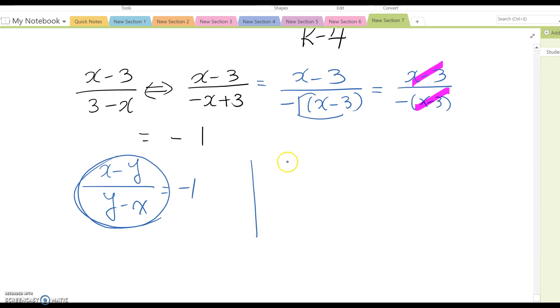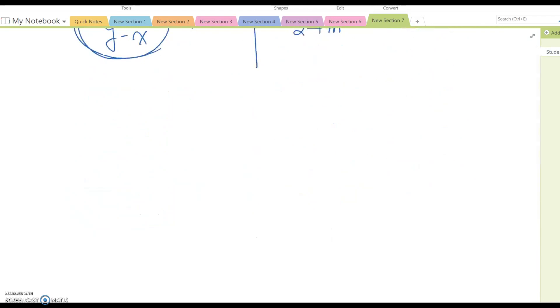Now what about this case: m plus 2 over 2 plus m? It looks very similar to the previous question, but both are still positive. So this one you can just rewrite as m plus 2 over m plus 2. This answer equals 1.